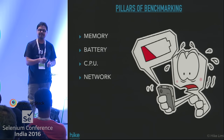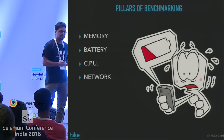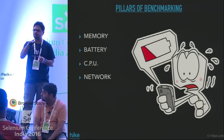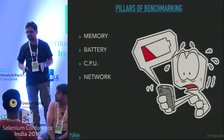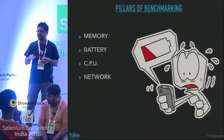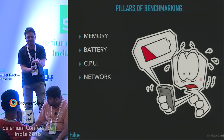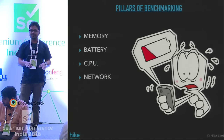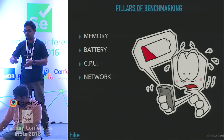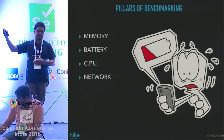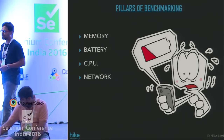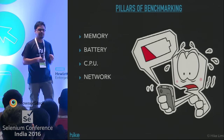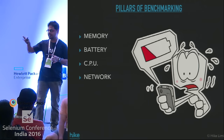Android has made it very clear: if the app exceeds a particular threshold value of memory consumption, it will kill the application. They don't assure you that staying below the threshold means they won't kill the app — they might still kill it — but at least you have to be optimized, because if you cross the threshold value, your app is definitely getting killed. That's where we realized memory is probably the most important aspect among these four pillars.